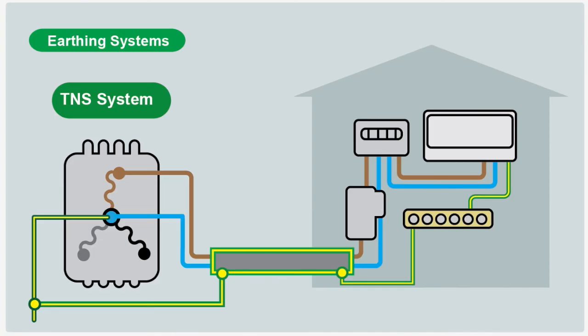The next type of earthing system is known as TNS. This time the distribution people do supply an earth, and it's often on the sheath of the supply cable. You've got your line and neutral in the cable, and the metallic outer